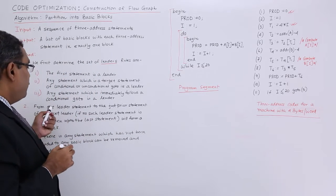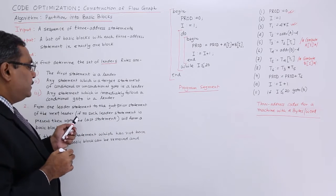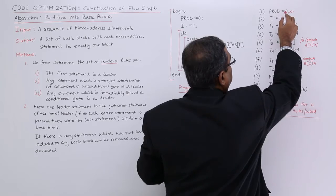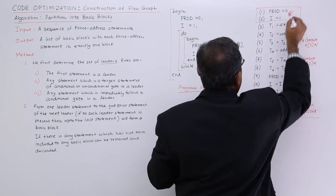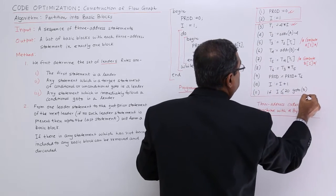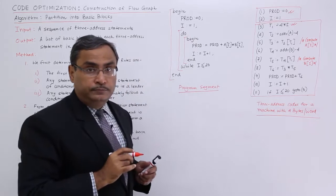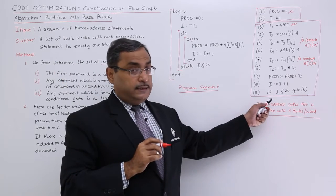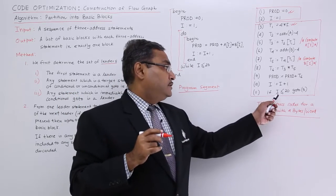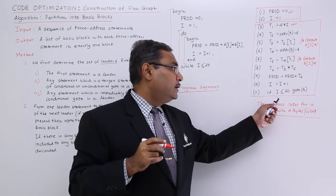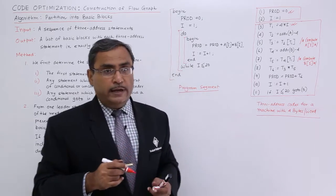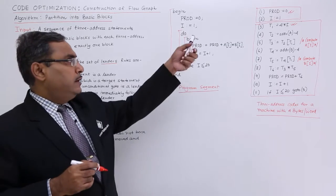A basic block spans from one leader statement up to just before the next leader statement. If no further leader exists, the basic block extends to the last statement. So we have one leader at statement 1 and another at statement 3, forming one basic block from statements 1–2. From statement 3 to the last statement (since there is no other leader) forms another basic block. If a statement number 12 existed, that would also be a leader. We have divided the code into two basic blocks: block 1 and block 2.